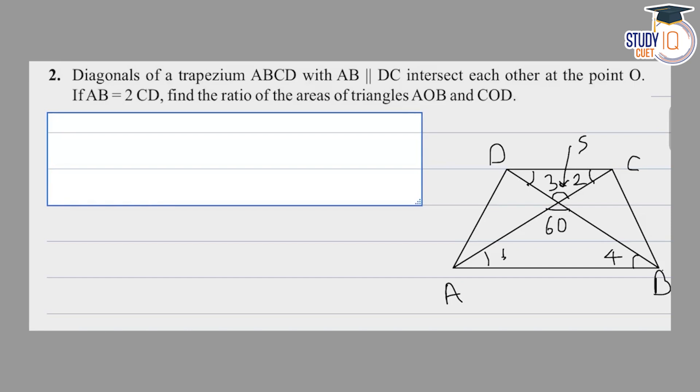I have drawn it earlier. So this is the diagonal intersection point O. If AB equals 2CD, find the ratio of the areas of triangles AOB and COD.